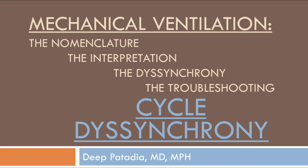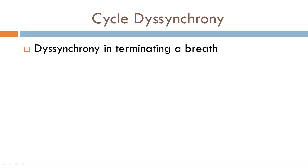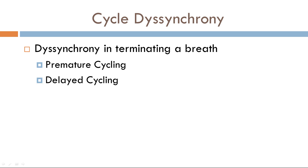Hey everyone, my name is Deep Pataria. In this video, we're going to be discussing cycle desynchrony. Cycle desynchrony is defined as desynchrony in terminating a breath or cycling a breath. There are two types of cycle desynchrony: premature cycling and delayed cycling. The issue with cycle desynchrony is time — inspiratory time. The inspiratory time is either too long or too short, and it's up to you to figure out which one it is.